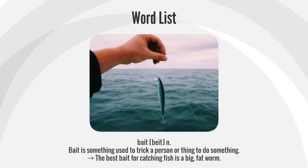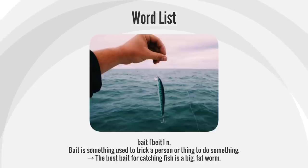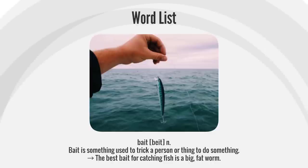Bait. Bait is something used to trick a person or thing to do something. The best bait for catching fish is a big fat worm.